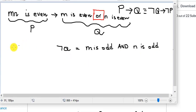And what is not P? Not P is M times N is odd. So it says if M is odd and N is odd, then M times N is odd. That's what the rule says, right?